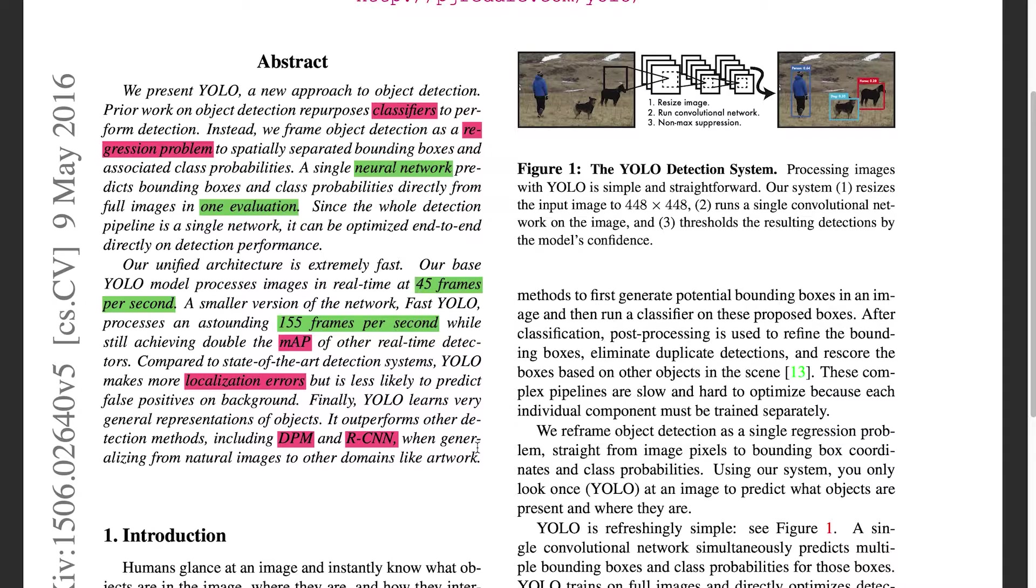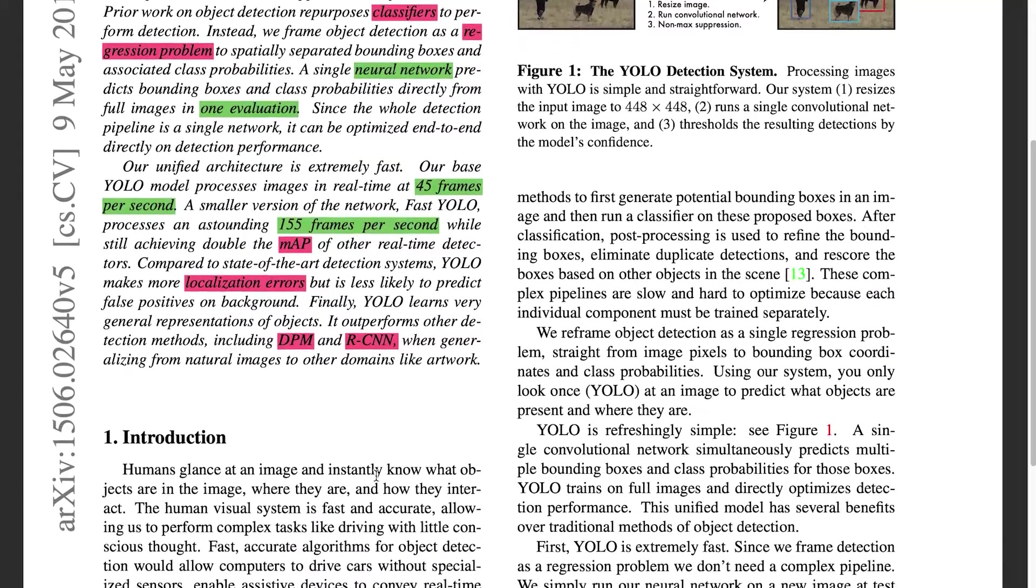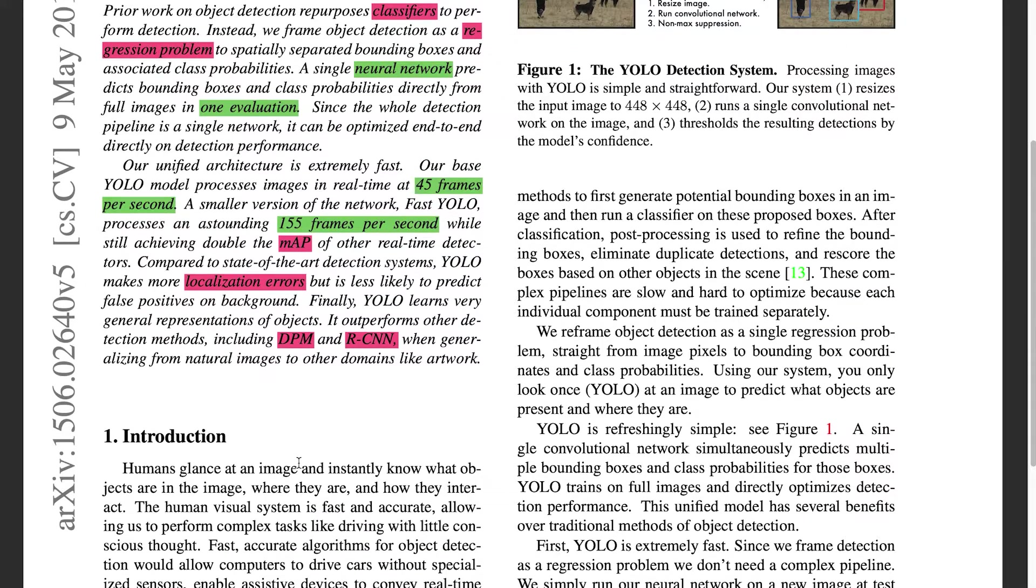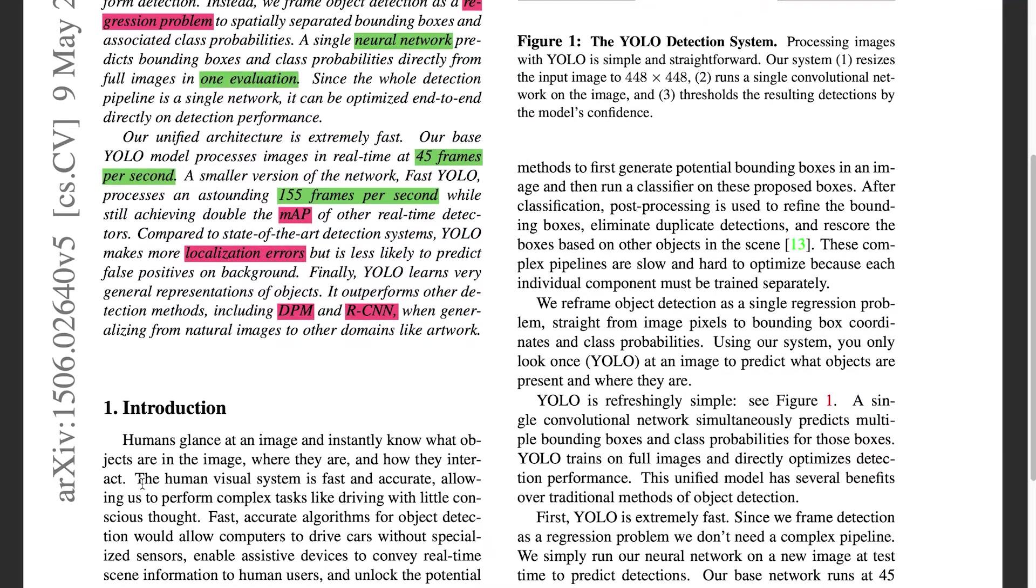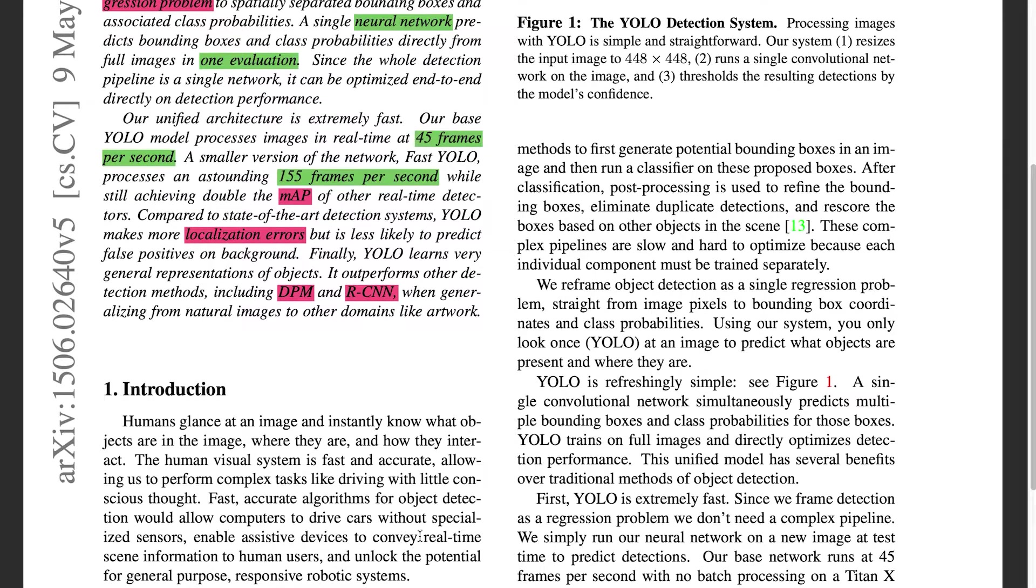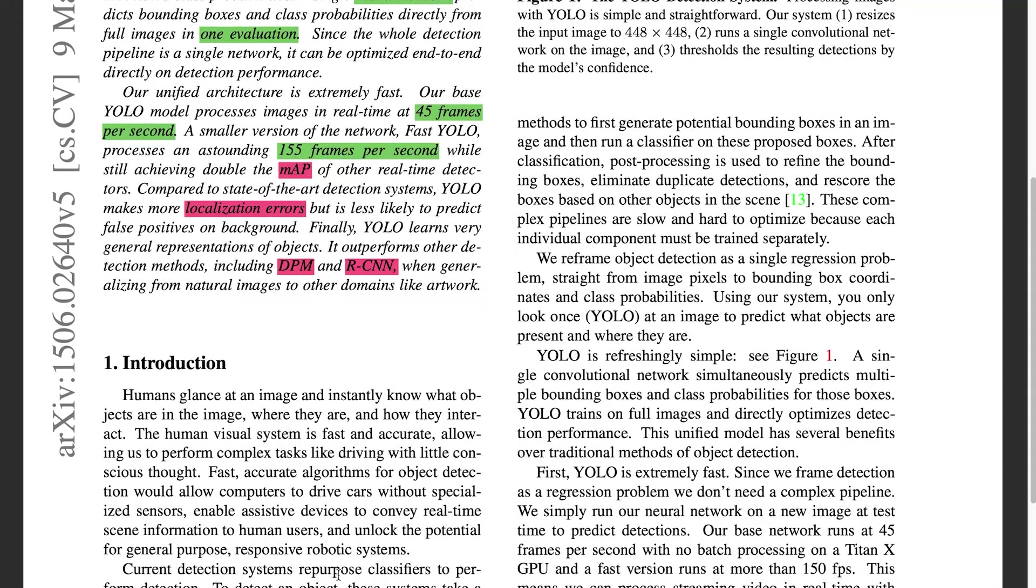Okay, so now that we have the abstract down, let's get into the nitty-gritty. Humans glance at an image and instantly know what objects are in the image, where they are, and how they interact. The human visual system is fast and accurate, allowing us to perform complex tasks like driving with little conscious thought. Fast, accurate algorithms for object detection would allow computers to drive cars without specialized sensors, enable assistive devices to convey real-time information to human users, and unlock the potential for general purpose responsive robotic systems.